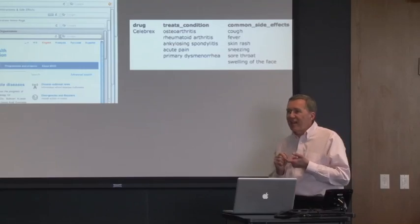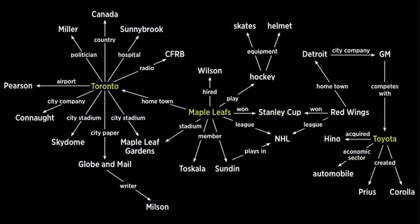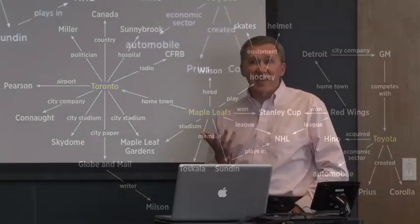These are beliefs like the Maple Leafs are a team that plays hockey, and their hometown is Toronto, or Toyota competes with General Motors and produces the Prius, or hockey requires helmet and skates.